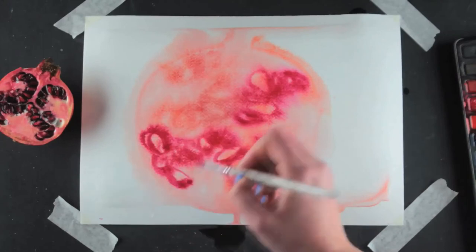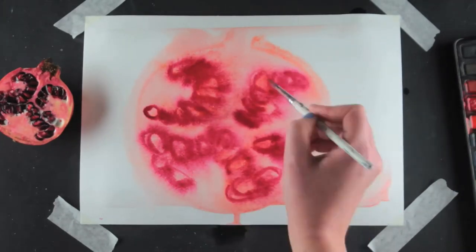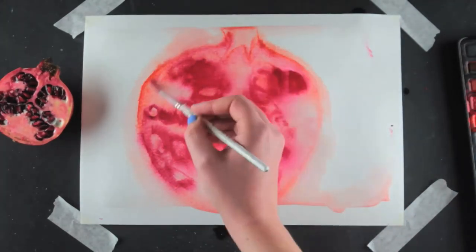Using the purpley red, which is called crimson, I paint the pomegranate seeds. Let them bleed.